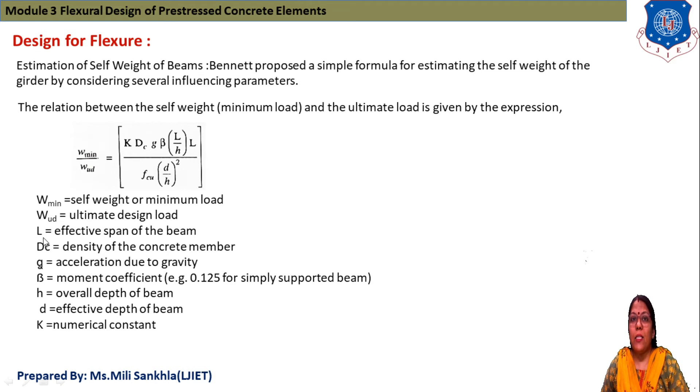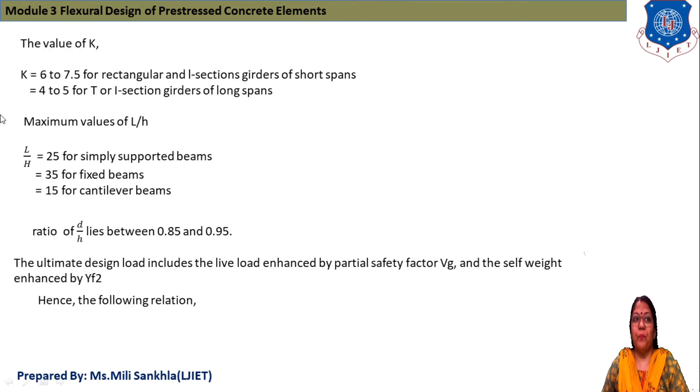W_UD is the ultimate design load, L is effective span of beam, DC is density of concrete member, G is acceleration due to gravity, β is moment coefficient (0.125 for simply supported beam), H is overall depth, D is effective depth. K is numerical constant: 0.125 for rectangular and I-section girder of short span, and 0.425 for T or I-section girder of long span. Maximum value of L/H ratio is 25 for simply supported beam, 35 for fixed beam, and 15 for cantilever beam.